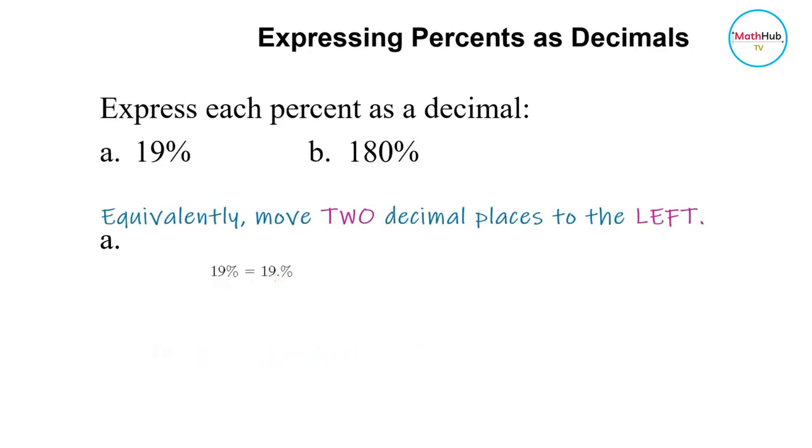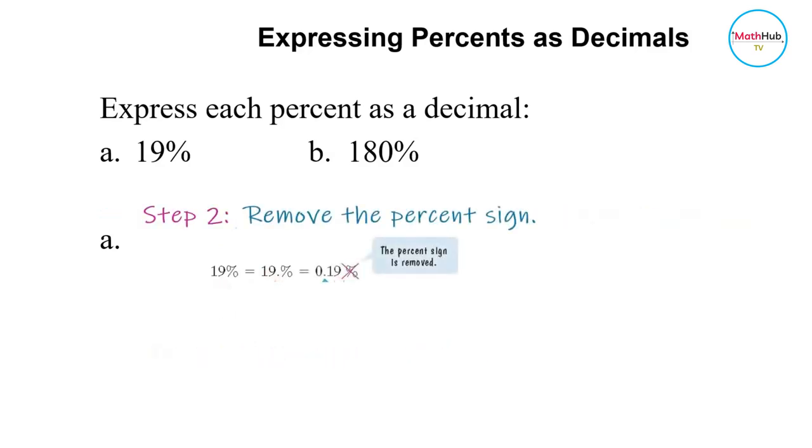Then remove the percent sign. Therefore, 19% is equal to 0.19.